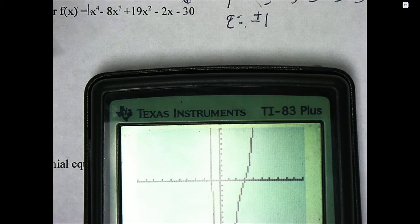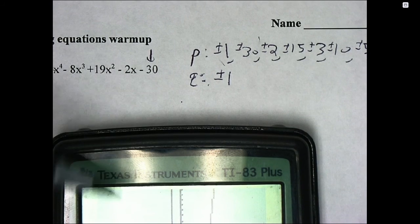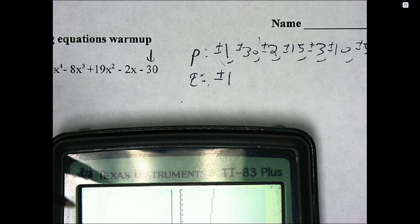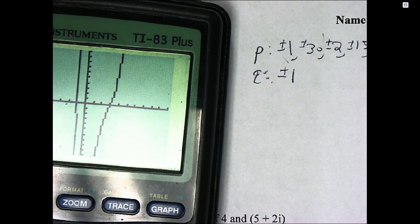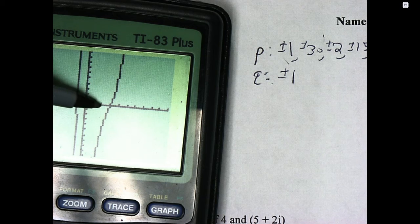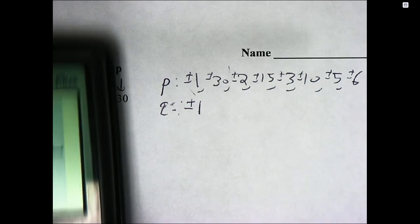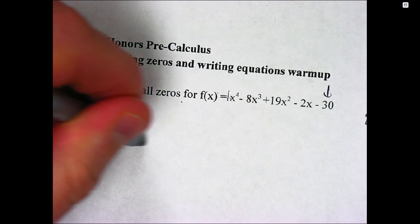And I see now a couple x-intercepts. I sort of use my P and Q list to guide me. The P and Q list is especially helpful if some of these numbers are fractions. In this case, it looks like the x-intercepts are integers, so I should be in good shape. So it looks like 3 is an x-intercept on my graph. 3 is on my list. So I'm going to check positive 3, and the way I check positive 3 is I do synthetic division.